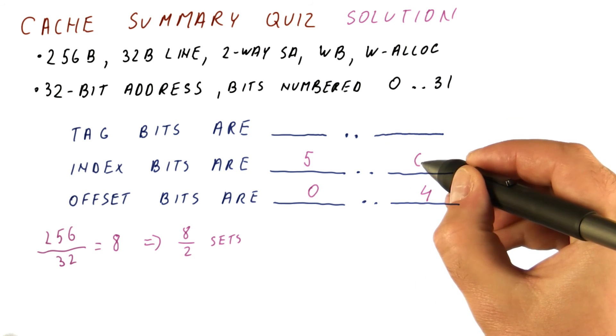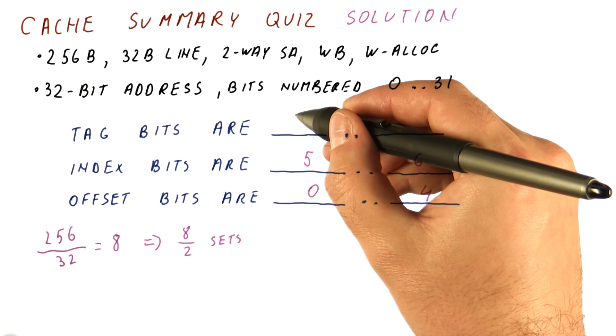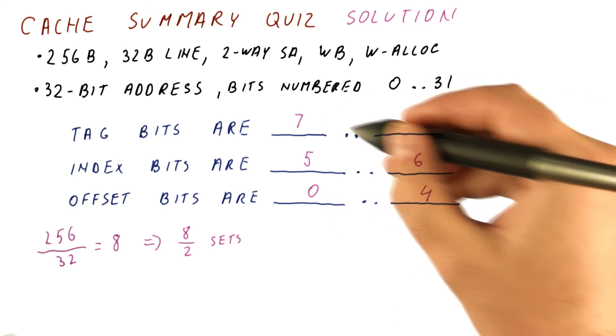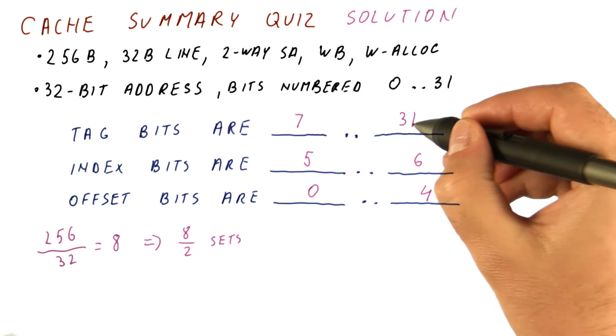So it's going to be bits five and six. And that means that the tag bits are starting from seven all the way to 31.